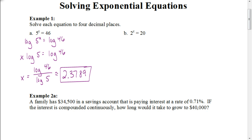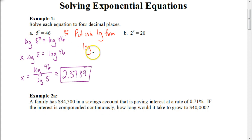The second method involves a lot fewer steps, but it requires a little more thinking. It still requires us to make sure that we have the base by itself — so 5 to the x power is by itself. Then what we're going to do is put this directly into log form. Our base in our equation is 5, so it's going to be a log base 5 of our value, which is 46, equals our exponent, which is x.